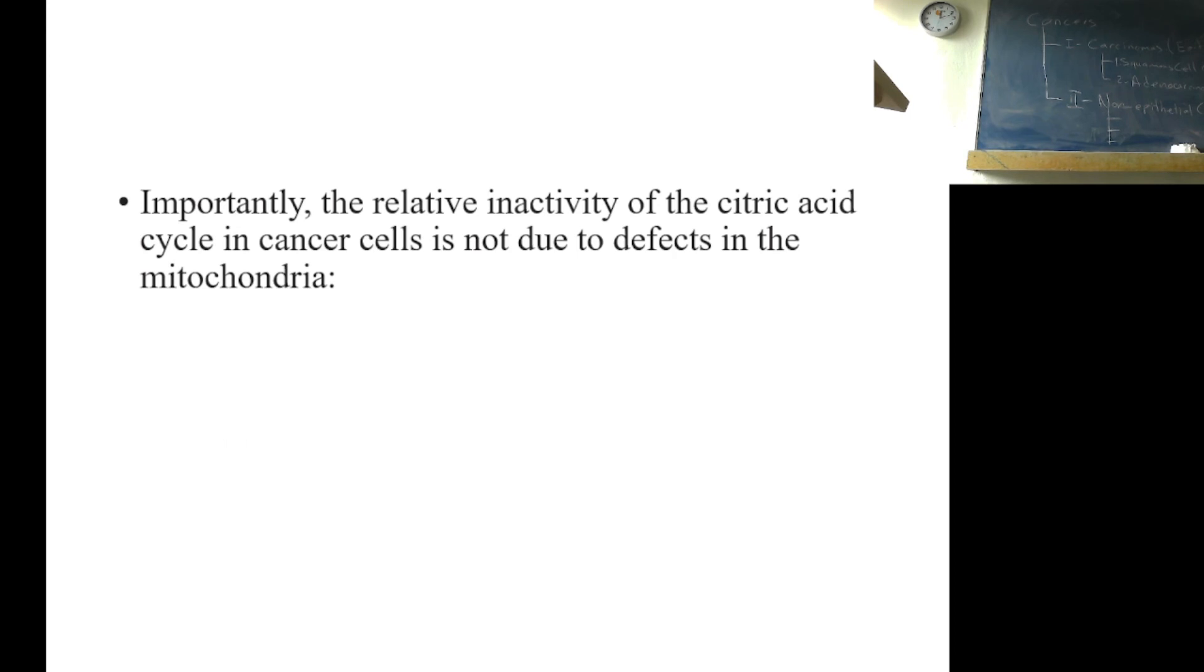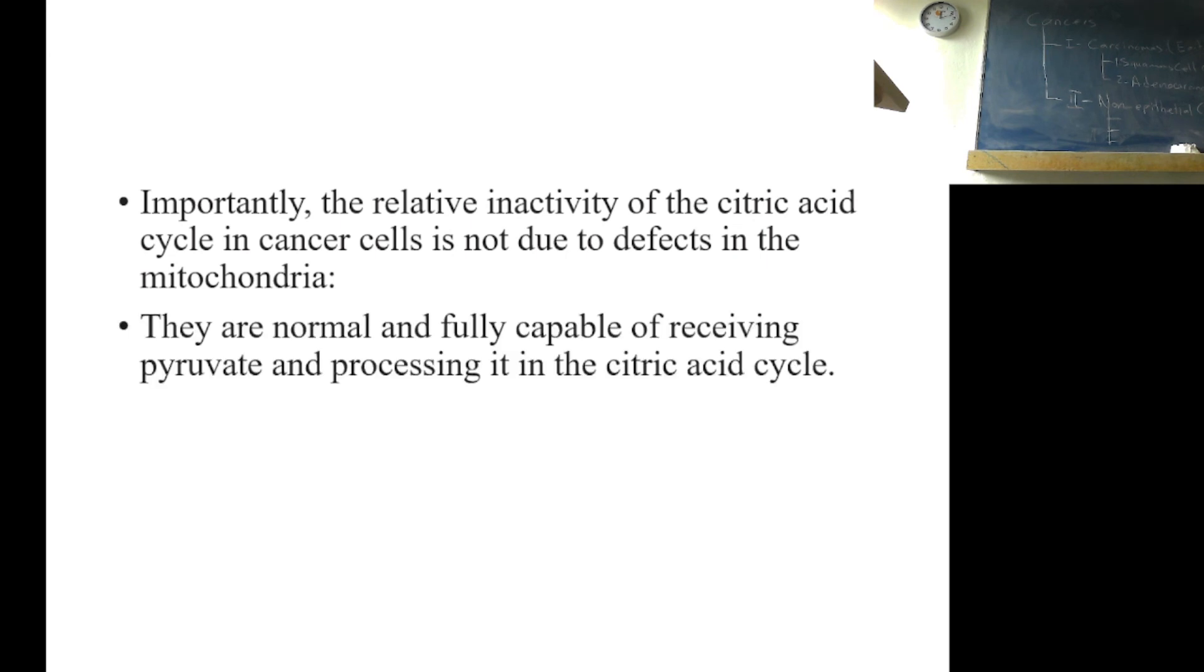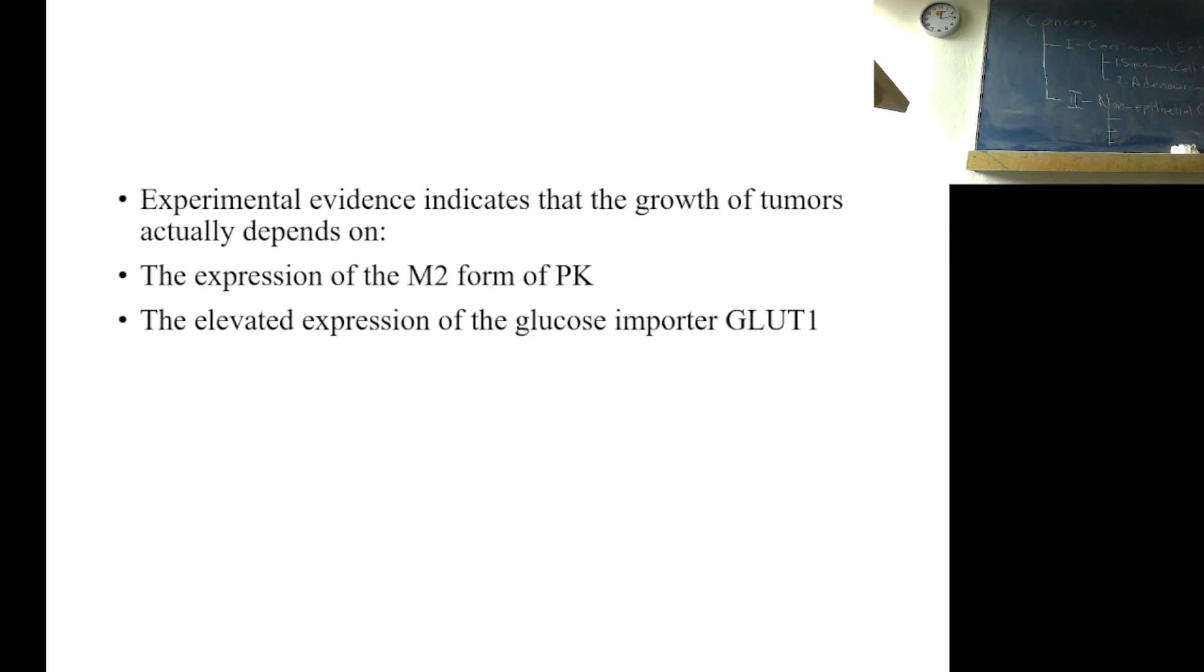Importantly, the relative inactivity of citric acid cycle in cancer cells is not due to defects in the mitochondria. They are normal and fully capable of receiving pyruvate and processing it in citric acid cycle. Experimental evidence indicates that the growth of tumors actually depends on expression of M2 and elevated expression of glucose importer, GLUT1. It's important.